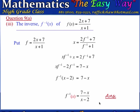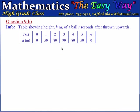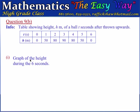Question 9b gives us a table showing the height of a ball above the ground after it was thrown vertically upwards. At t equals 0, the ball is on the ground. After 1 second, height is 50 meters; after 2 seconds, 80 meters; after 3 seconds, 90 meters; after 4 seconds, 80 meters — so it's coming back down; after 5 seconds, 50 meters; and after 6 seconds, the ball is back on the ground at 0 meters.